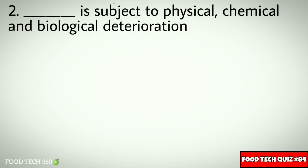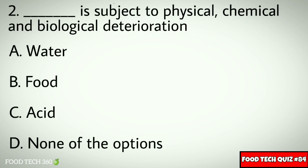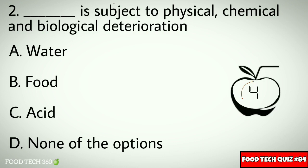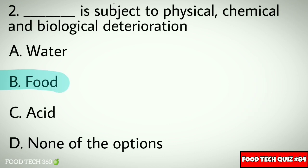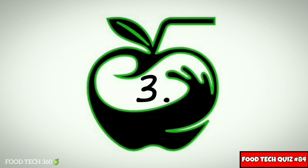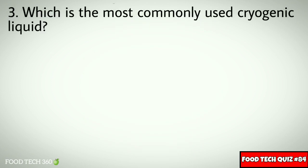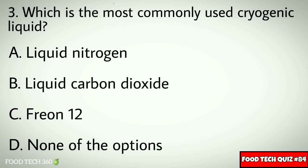Question number 2: Dash is subjected to physical, chemical, and biological deterioration. Options: A. Water, B. Food, C. Acid, D. None of the options. Correct answer: B. Food.